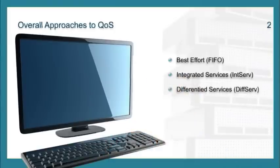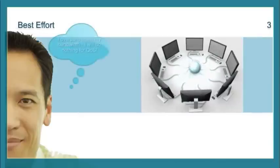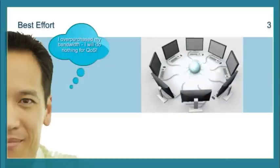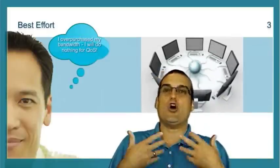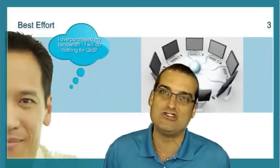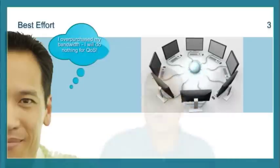Best effort — it sounds like we're just going to give it the good old college try. What you're actually going to do in a best effort implementation — and this is very rare these days — is get out the wallet and dramatically over-provision the bandwidth your network calls upon. If you've got fragile voice traffic competing with data traffic, there's no real competition because of that over-provisioned bandwidth. But consistently over-provisioning all those circuits makes it obviously not a popular QoS approach.